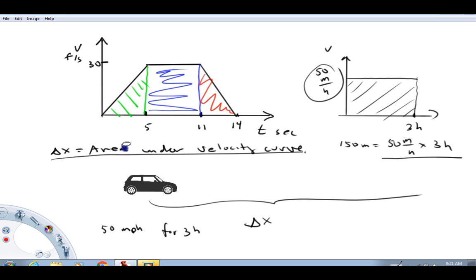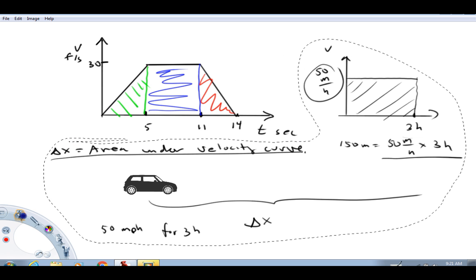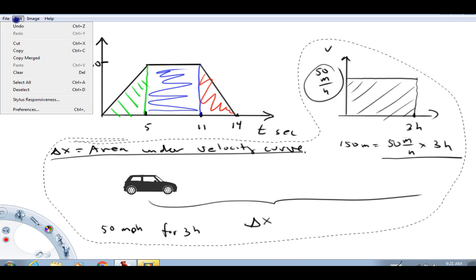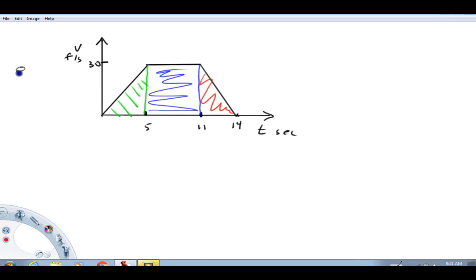I'm going to take a moment and get rid of some things I don't need. The displacement of this car is going to be the sum of the three displacements: the green area, the blue area, and the red area. For the first term, because this is a triangular area and the area of a triangle is one half base times height, that first displacement equals one half times the base, five seconds, times the height, 30 feet per second.